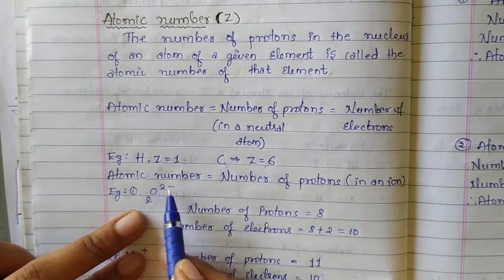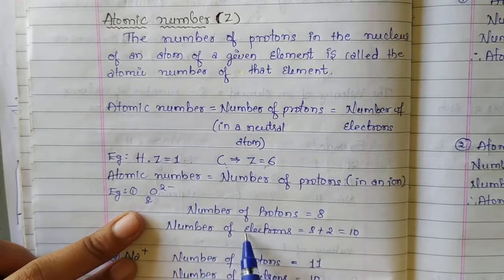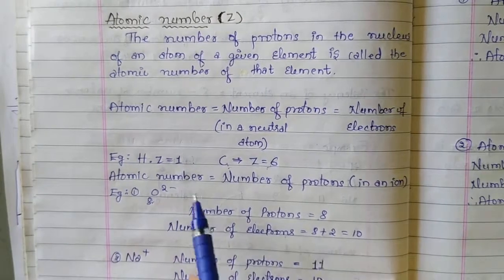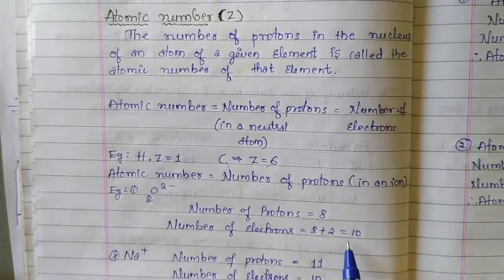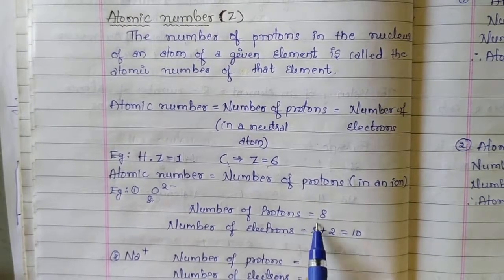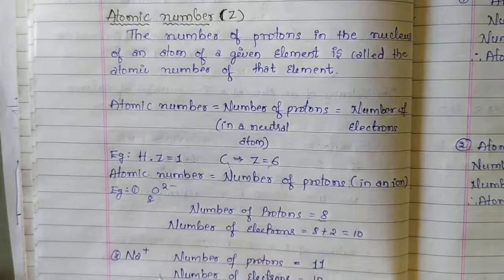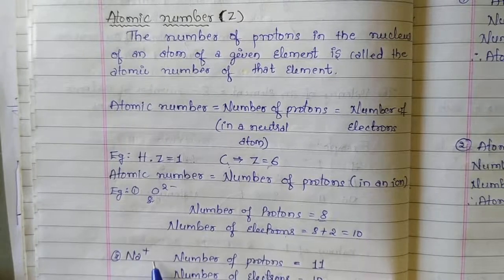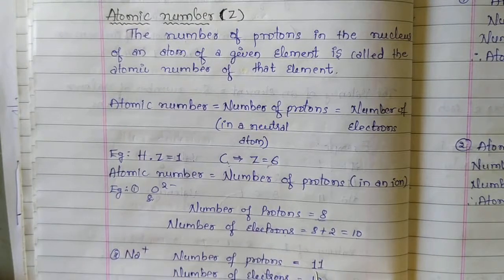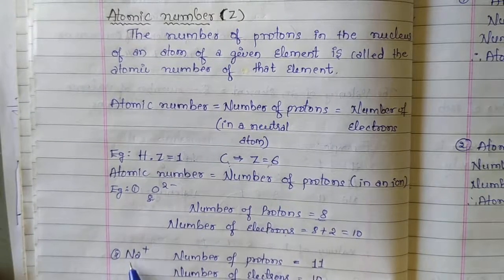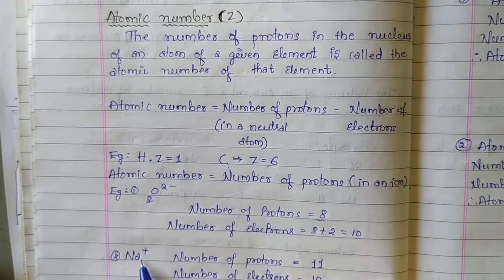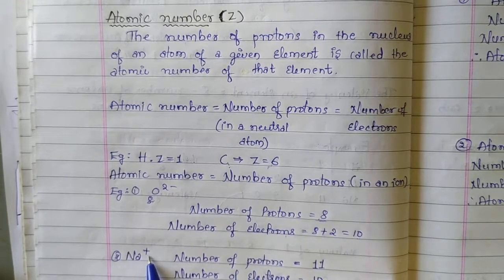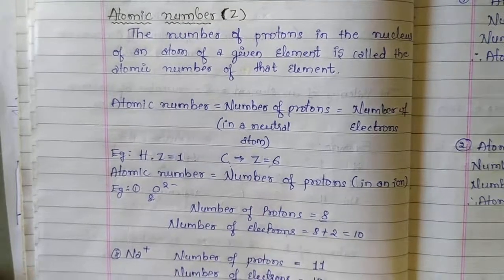But on this oxygen, a 2 minus charge is there, meaning there are 2 extra electrons. So while counting the total number of electrons in this ion, we add 8 electrons plus 2 extra electrons to get 10 electrons total. But the number of protons remains the same, that is 8. If you take sodium in neutral atom, number of protons is 11. When we remove 1 electron from the neutral sodium atom, on losing 1 electron it will have 1 positive charge, so 10 electrons are present in this ion.